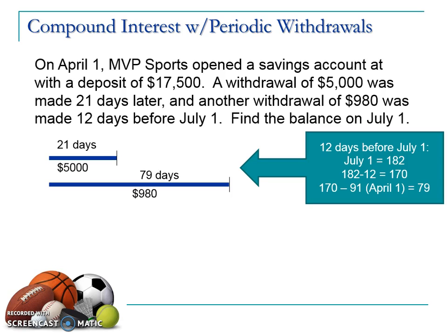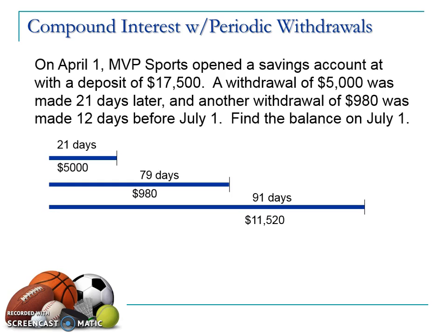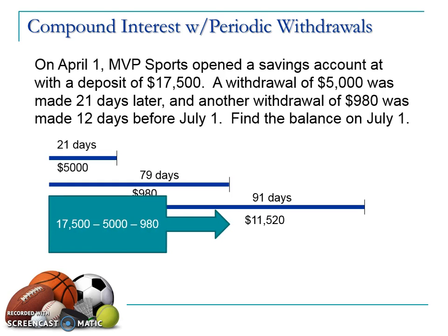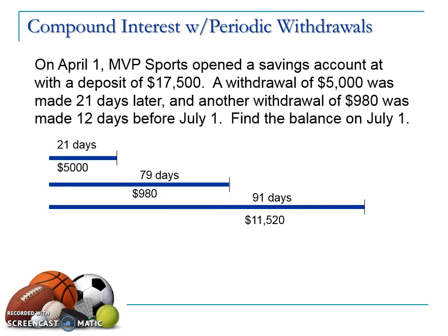The last step is to determine what remains of the initial deposit that actually stayed in the account the entire time. The $11,520 comes from the initial deposit of $17,500 minus withdrawals of $5,980, which leaves a net amount of $11,520 that was in this account from April 1st to July 1st. If you do the arithmetic on those dates, you find it's 91 days.